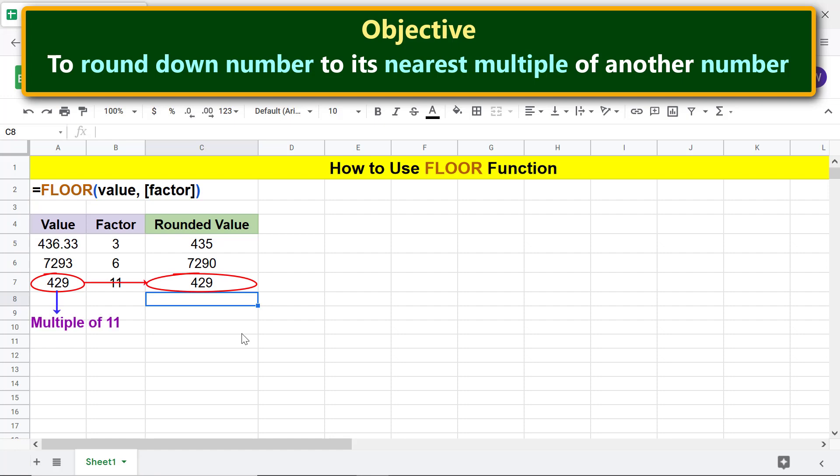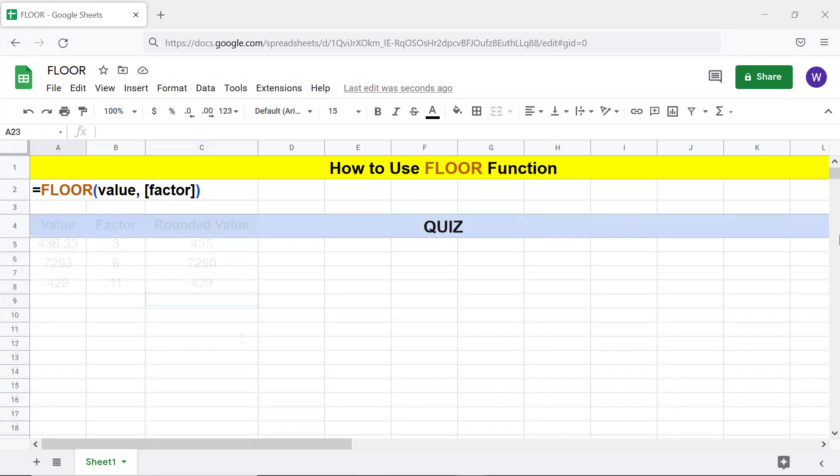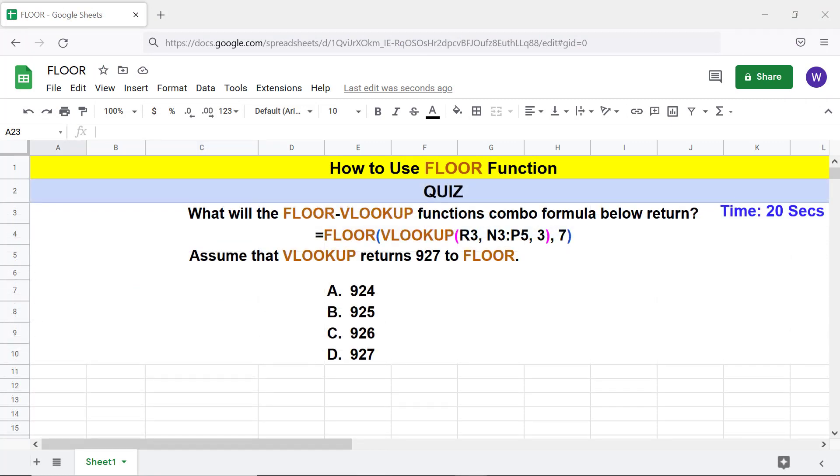Quiz: What will the FLOOR-VLOOKUP functions combo formula below return? Assume that VLOOKUP returns 927 to FLOOR. A: 924, B: 925, C: 926, D: 927.